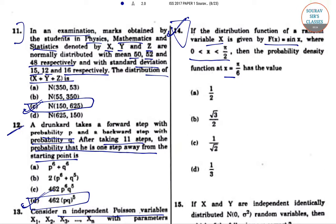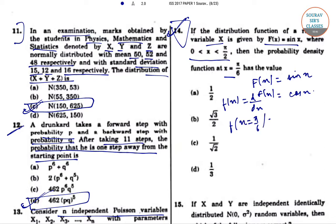So now, F(x) = sin x. The PDF, that is small f(x), equals d/dx of capital F(x), which equals cos x. So f(x = π/6) = cos(π/6) = √3/2. Therefore, option B is the correct answer.